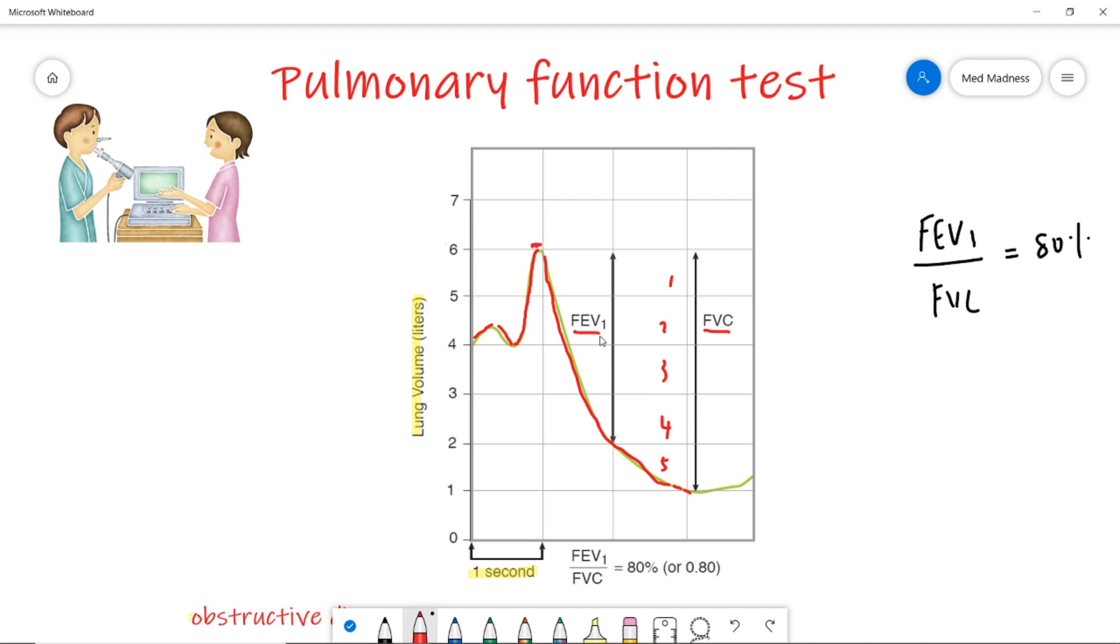What is forced expiratory volume at first second? Now, check the x-axis. You have 2 to 3 seconds. So, 2 to 3 seconds it takes for you to blow out the air. What is the amount of air you can blow out in the first second? It is forced expiratory volume at first second or FEV1. Clearly, we can compare these two. FEV1 by FVC ratio.